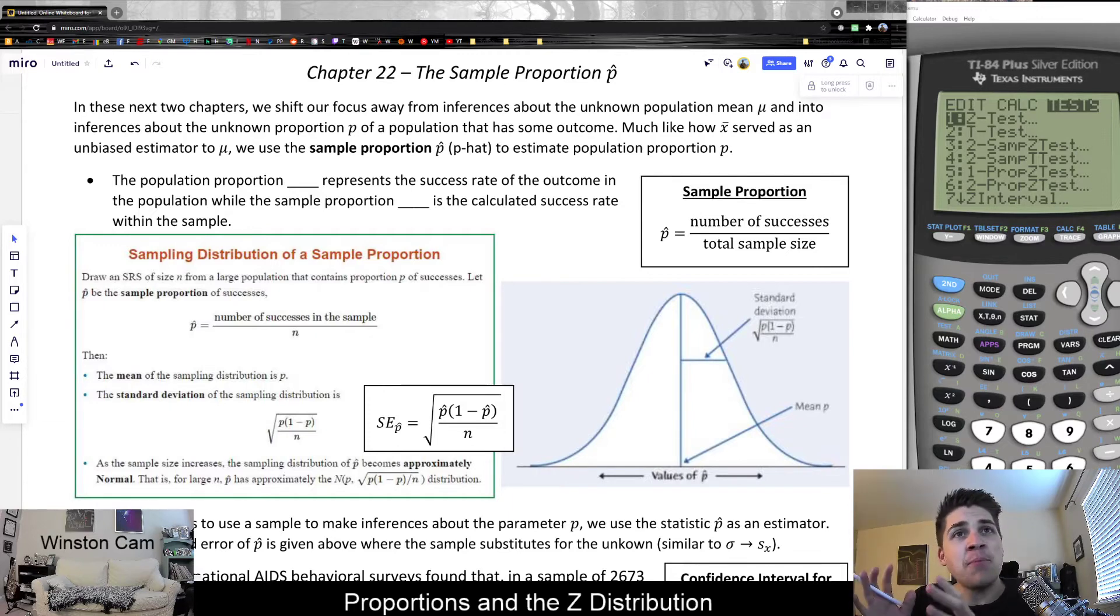This chapter, we're going to continue working with confidence intervals and significance tests, but this time we're changing the type of statistical inference that we're making. Instead of an inference about the mean itself, we're going to be looking at a proportion of the population and how confident are we in dealing with statistics of that sort.